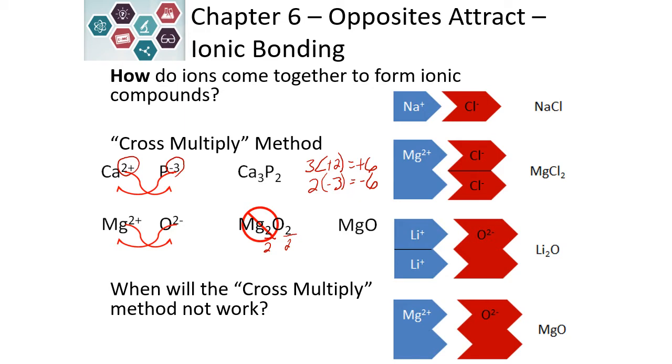You just need to be a little bit more careful and reduce anything if you decide to do the cross-multiply method. You can just reduce it if the cross-multiply method does not give the simplest form.